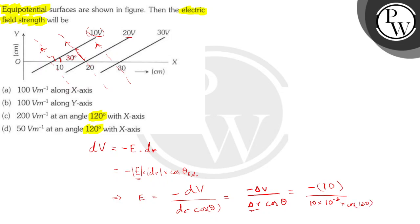So we have cos of 120. We can then write E is equal to 10 divided by 10 into 10 power minus 2 cos of 120.